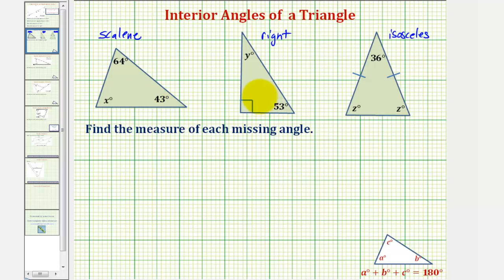Regardless of the triangle though, the sum of the interior angles must always be equal to one hundred eighty degrees. And we can use this fact to set up equations and solve for the unknown angles in each triangle.